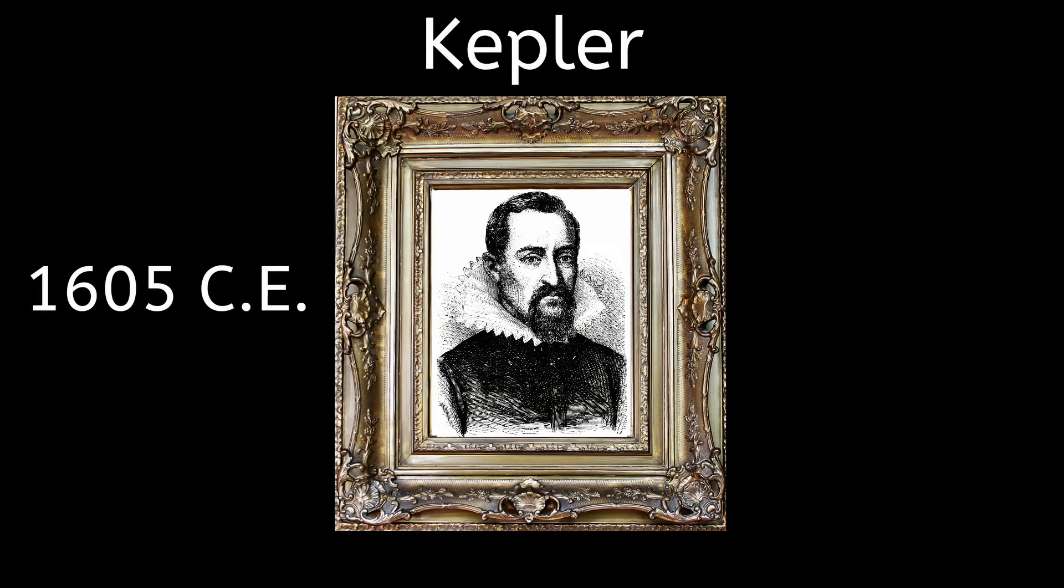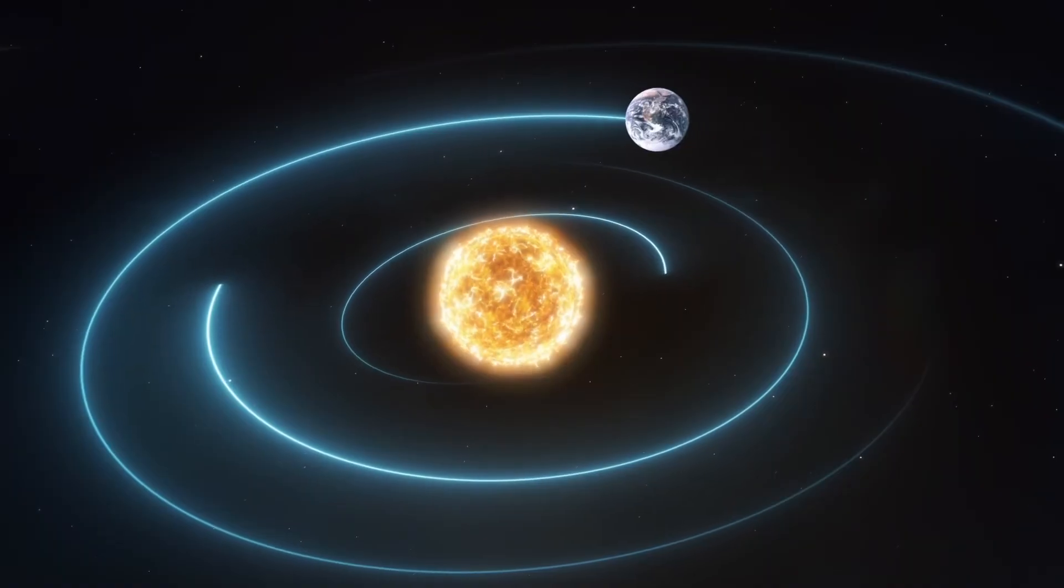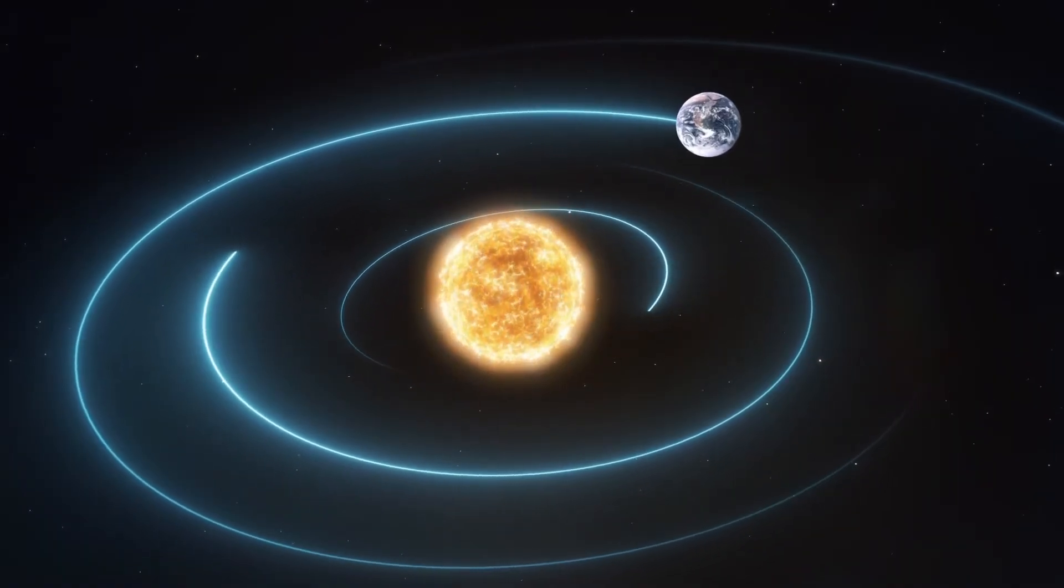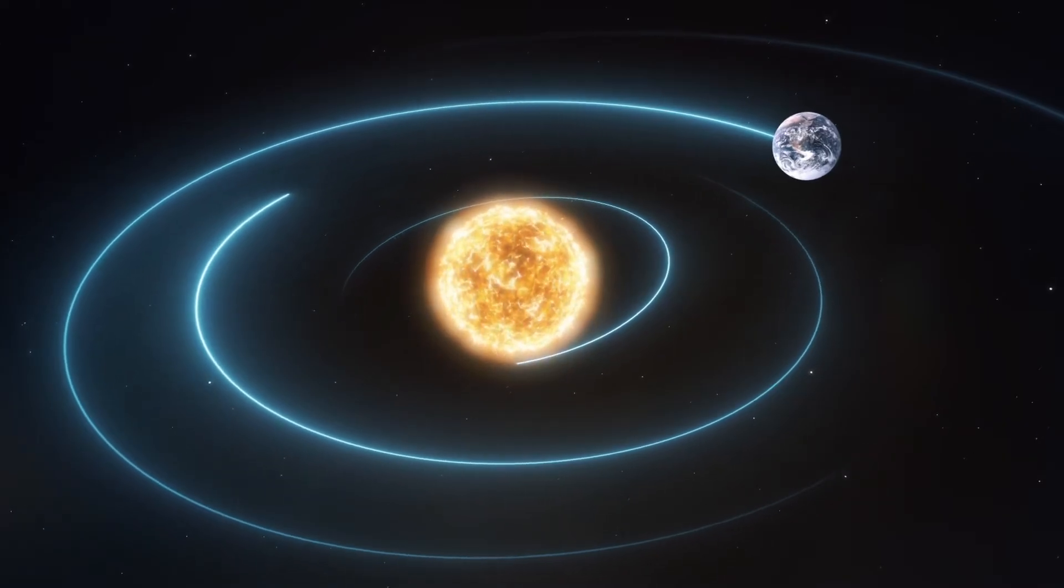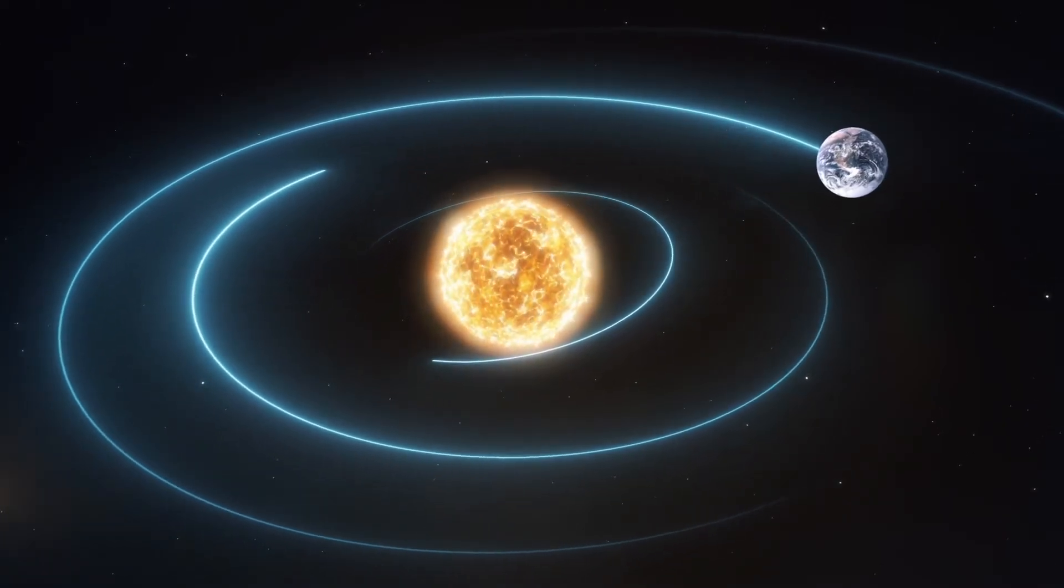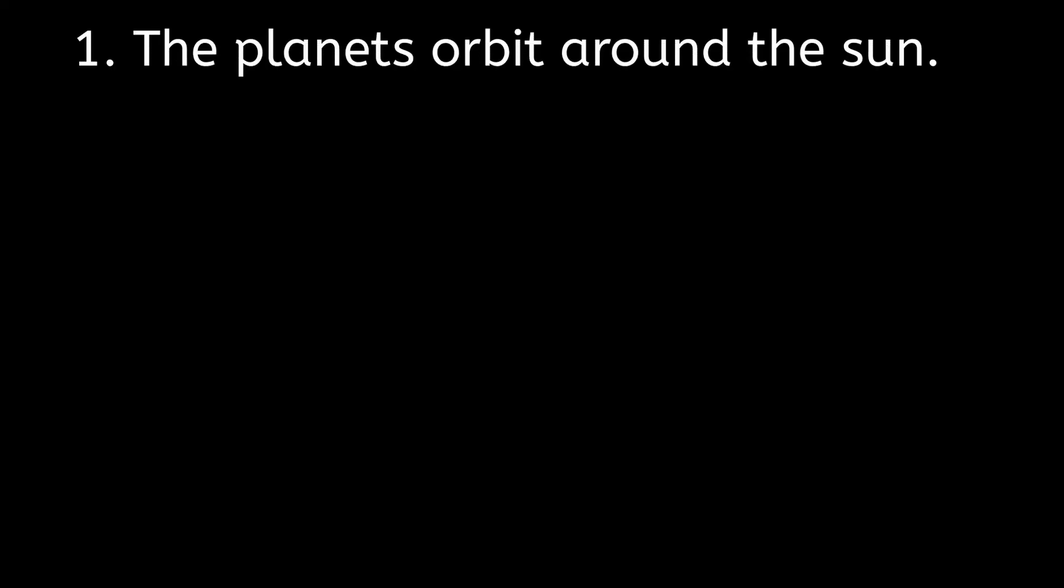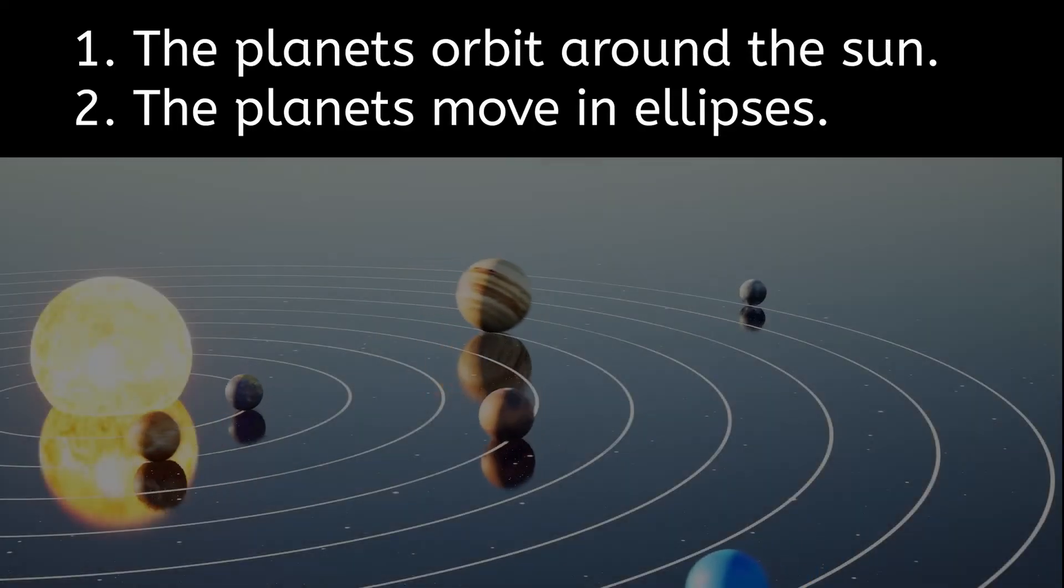A few years later, in 1605 CE, Johannes Kepler, a German mathematician and astronomer, carefully analyzed the recorded observations of the planets and realized that the planets did not move in a circular motion. They moved in ellipses with the Sun in the center. Okay, so now that we have two important facts straight: the planets orbit around the Sun, and they move in ellipses.